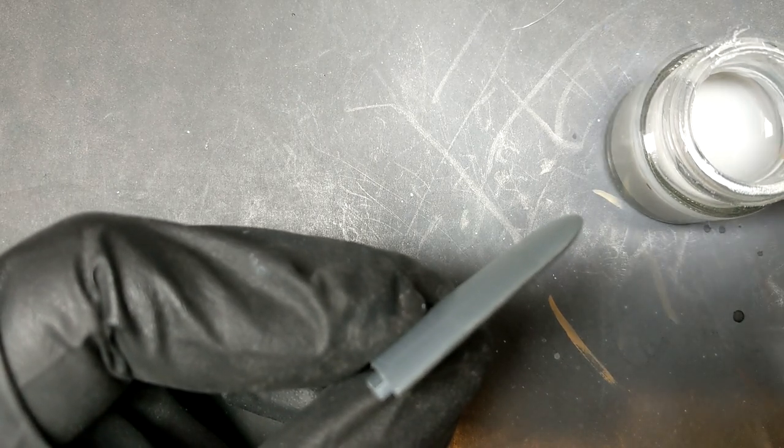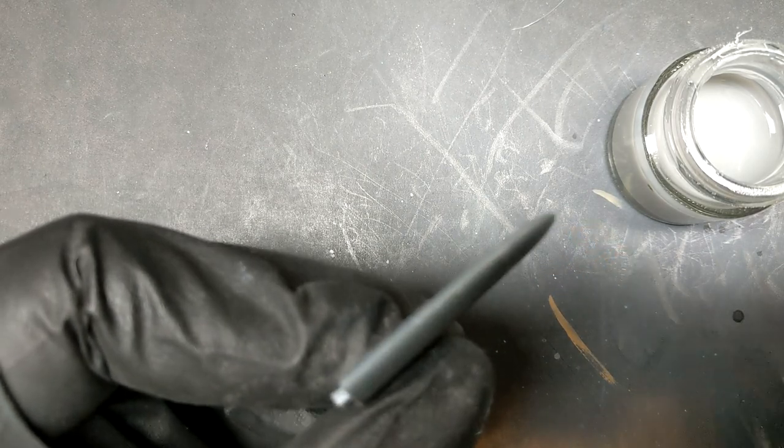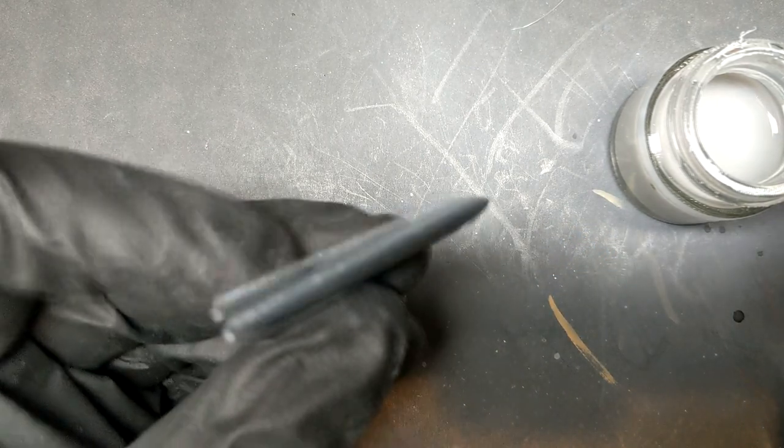And sprue goo has quickly become my favorite material for filling in gaps because it dries very hard. And as I said in episode one, it also bonds with the styrene.